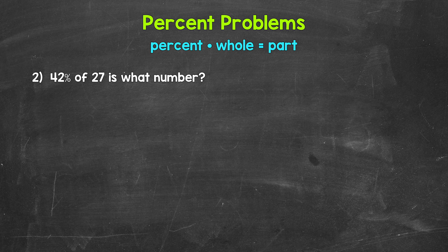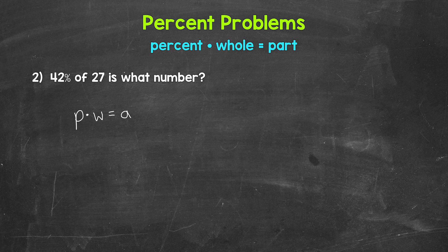Taking a look at number 2, we have 42% of 27 is what number? The wording here is a little different than number 1. But we can go about solving this the same exact way. 42% of 27 is what part of 27? Let's write our equation. The percent times the whole equals the part.